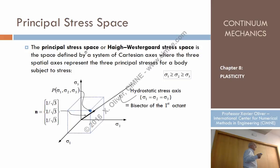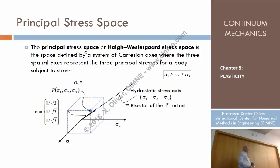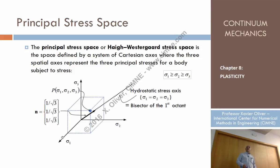There are three principal stresses at this point. And if I take another point, there will be three principal stresses — different, but there will be three principal stresses too. Why don't we construct a Cartesian system in which the axes are, instead of x1, x2, x3, we take sigma 1, sigma 2, sigma 3? So in this system, which is called the principal stress space, don't forget ever that we are using the convention sigma 1 greater than sigma 2 greater than sigma 3.